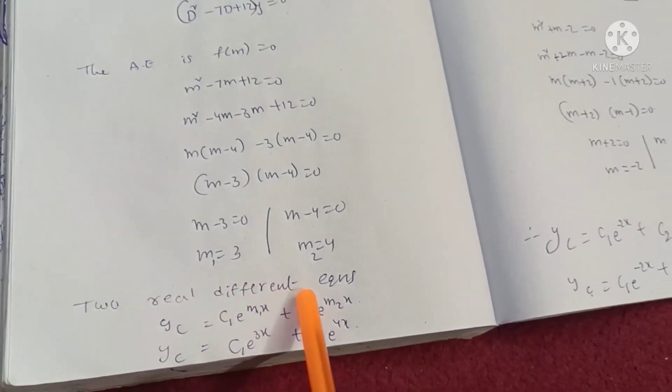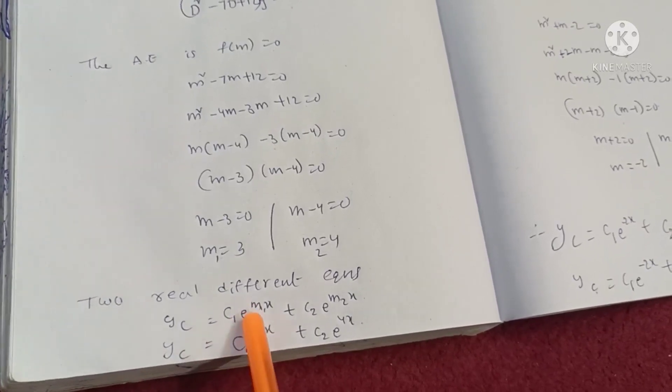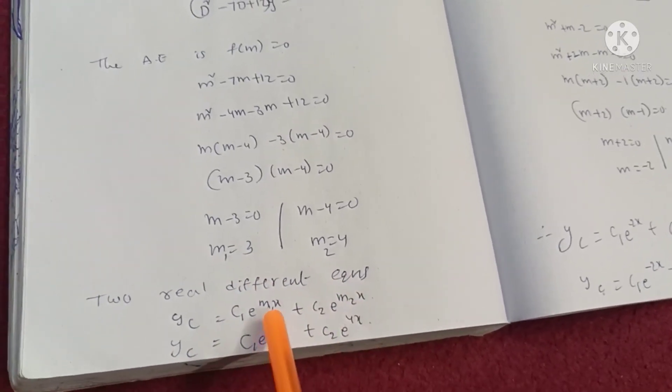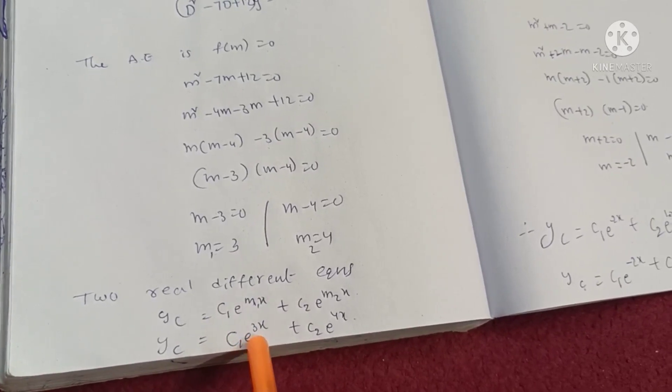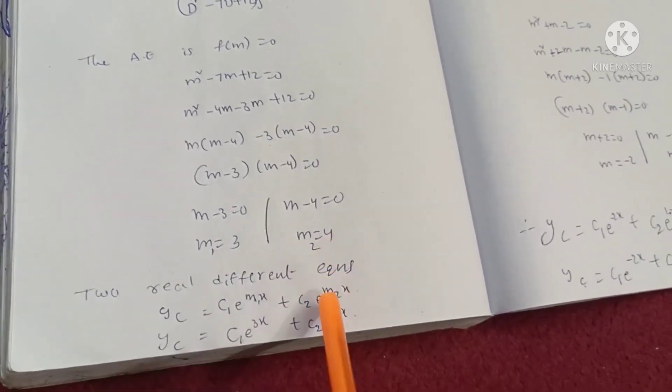Formula for complementary solution: two real, different roots. y equals C₁e^(m₁x) plus C₂e^(m₂x). m₁ is 3, therefore C₁e^(3x) plus C₂ into m₂ is 4, so e^(4x).